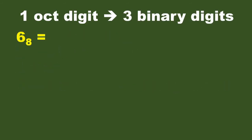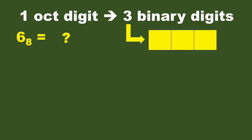Let's have an example. Let's say we have 6 in base 8 — this is a number in the octal number system. How do we convert it into binary? Since we know that each octal digit is represented with three binary digits, let's take three blank spaces. The rightmost digit we call the least significant bit, or LSB. It is the place with the smallest or least place value, which is 2 to the power of 0.